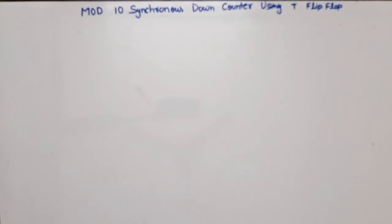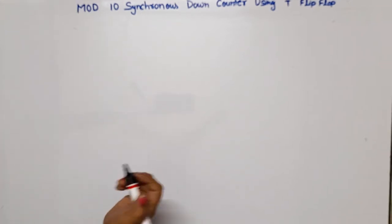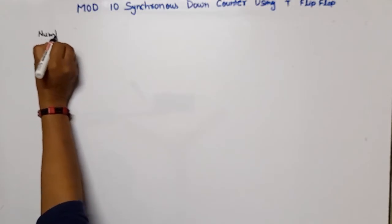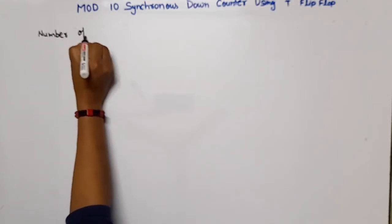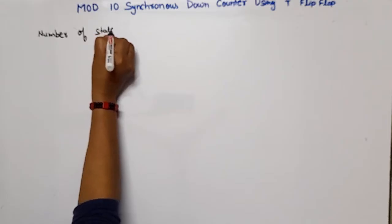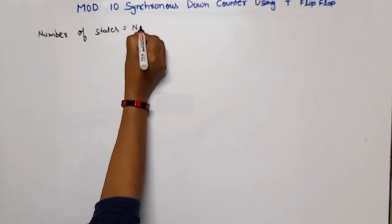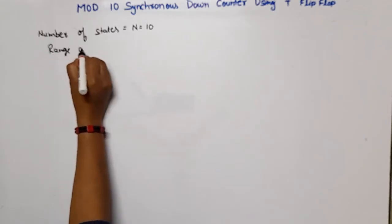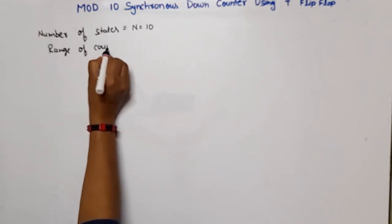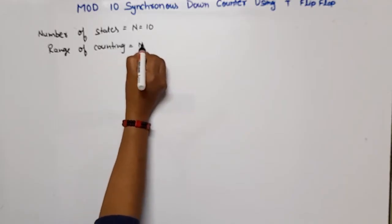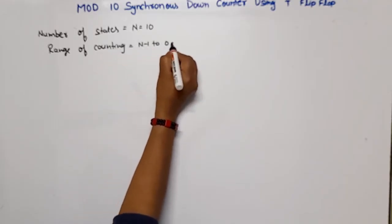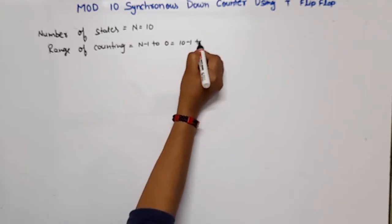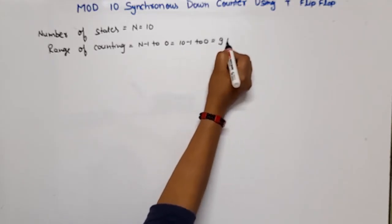First of all, we need to know how many states or how many clock pulses can be counted by this counter. The number of states N is equal to 10. The counting down range will be N minus 1 to 0, which is 9 to 0.